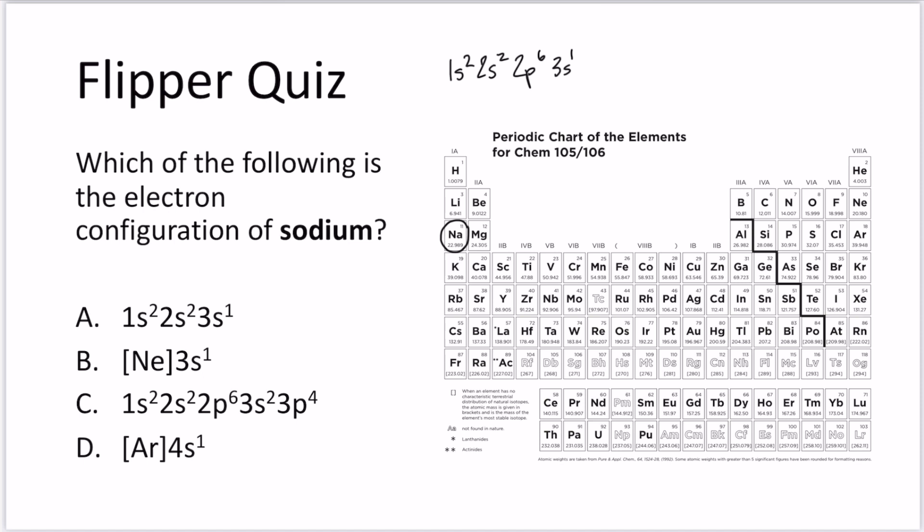That would be our full electron configuration for sodium. If we wanted to write an abbreviated form, we can take the noble gas that comes before it, which is neon, and we can say [Ne] and then we just have 3s1 remaining because neon takes care of the first 10 electrons.